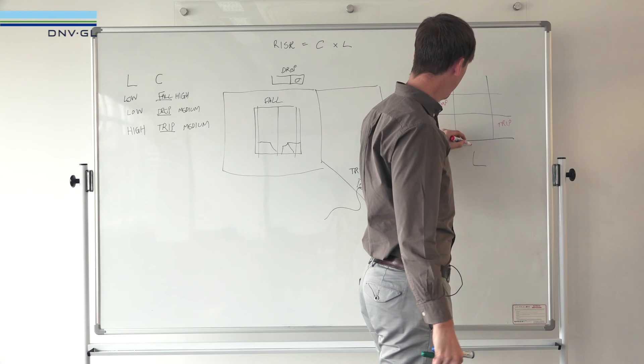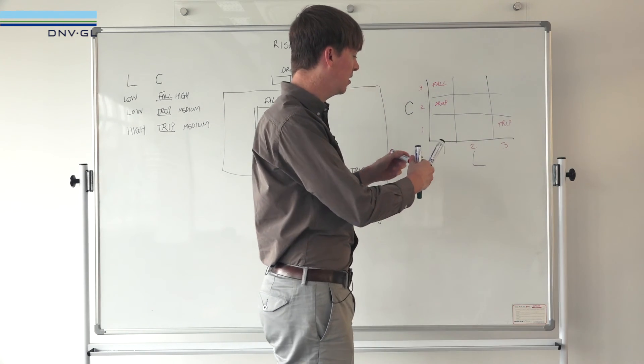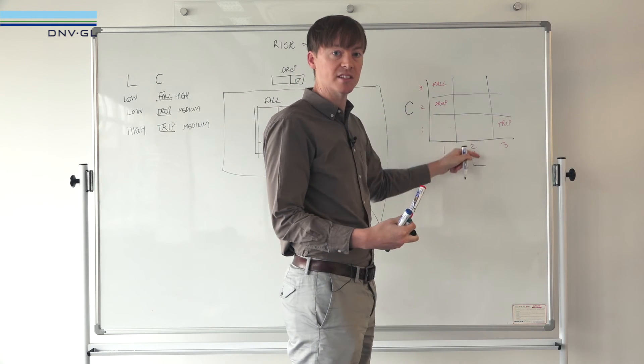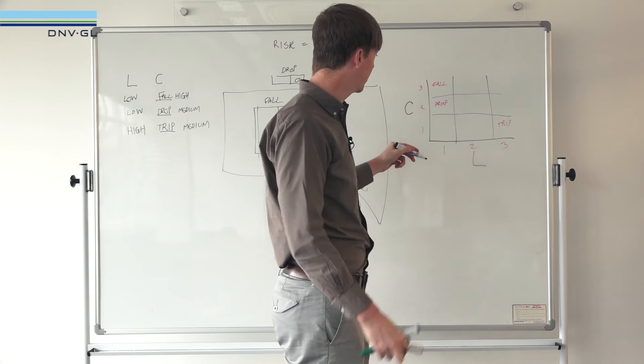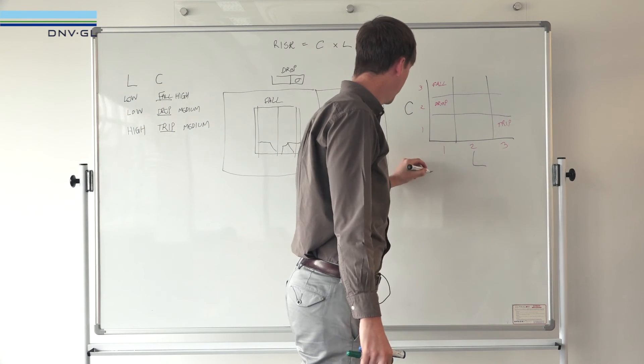The trip hazard was a medium consequence but it's a high likelihood, so trip is over here. Now bearing in mind that we've somewhat semi-quantified these values, we can now list the risk of each of these undesirable events.